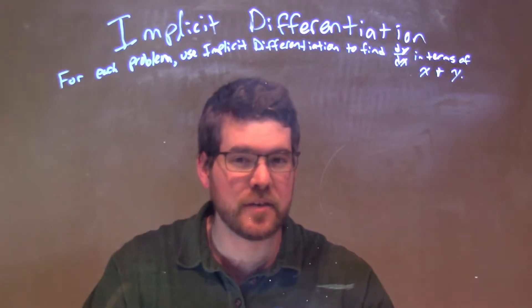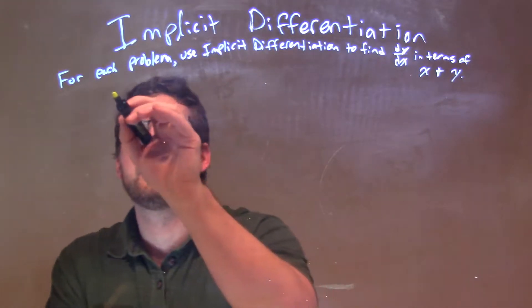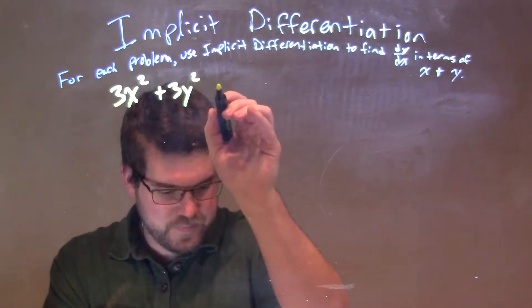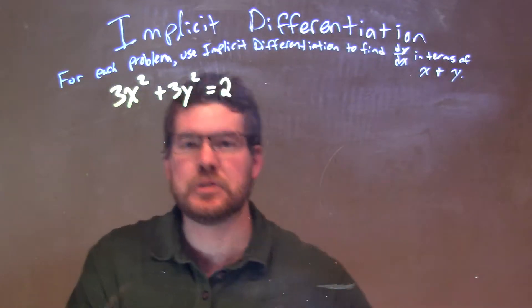So if I was given this problem: 3x² + 3y² = 2y.